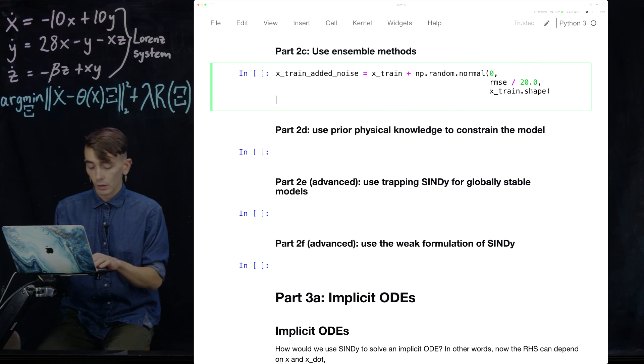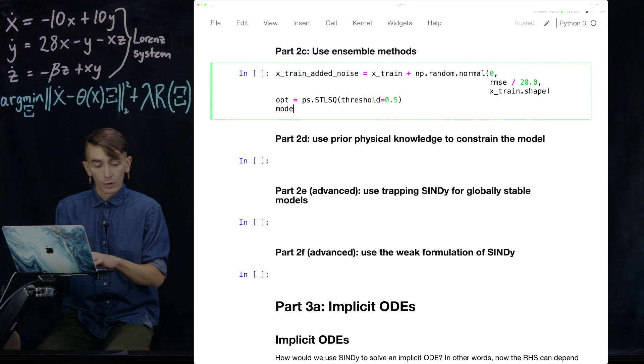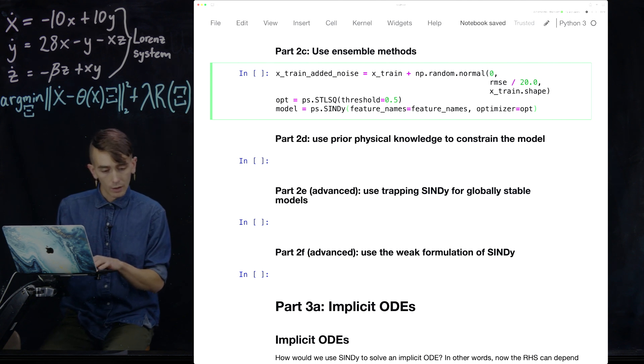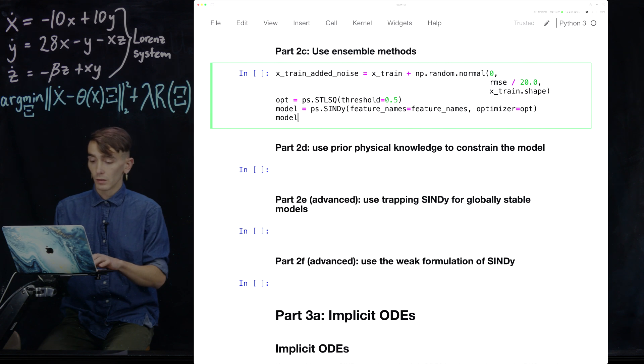We're going to define some optimizer to solve the sparse regression problem. We're going to define our model. And once again, define our features for Lorenz, put in our optimizer.